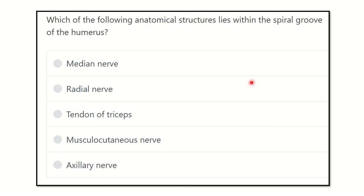Hello everyone, welcome to another brand new video on the Dark MRCS channel, which is especially dedicated for MRCS exam preparation. Here is the question: which of the following anatomical structures lies within the spiral groove of the humerus? The options are: median nerve, radial nerve, tendon of triceps, musculocutaneous nerve, and axillary nerve.